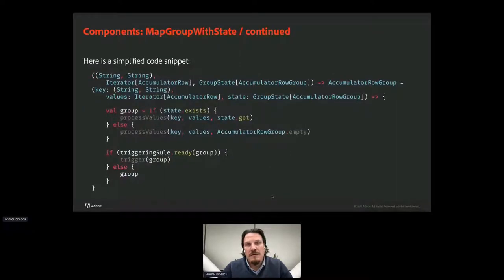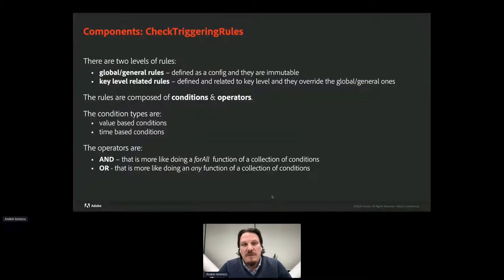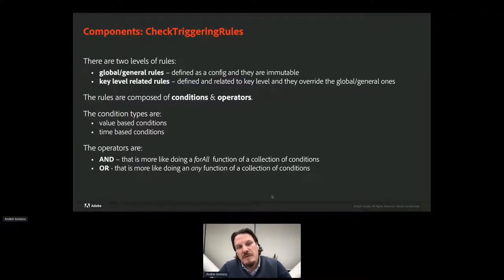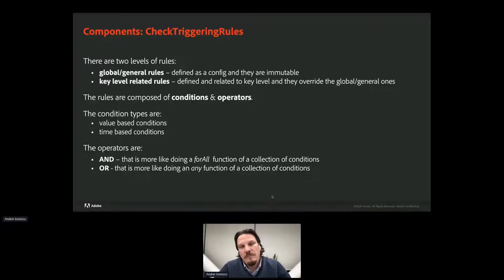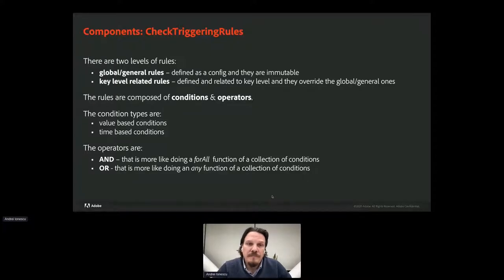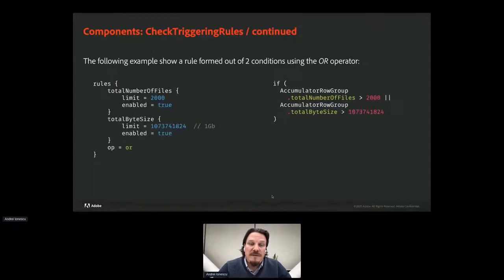The final step is checking if the group qualifies for triggering in the checkTriggeringRule step. There are two levels of rules: global and key-related. Global rules are the default rules applying to all groups, while key-related rules are specific to a key value — table ID, owner ID, or both. This is for cases where you need a different rule threshold for a specific key. For example, for a specific table ID you may need a more aggressive triggering rule.